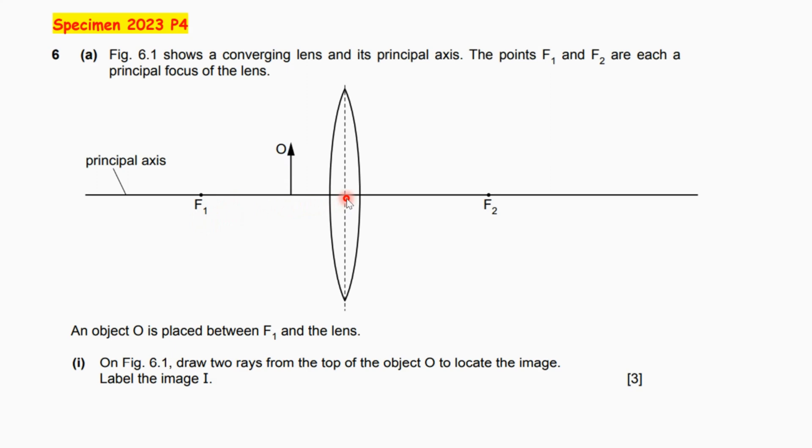So I'm going to start my drawing by drawing one ray here which is parallel to the principal axis. Then this ray is going to be emerging through the convex lens and passing through the F2, this is the principal focus at the right side.